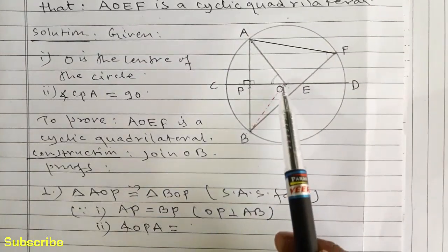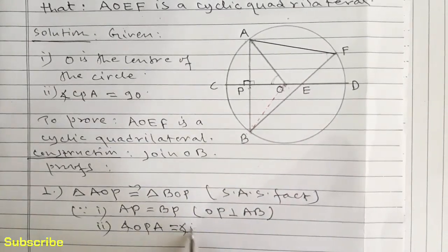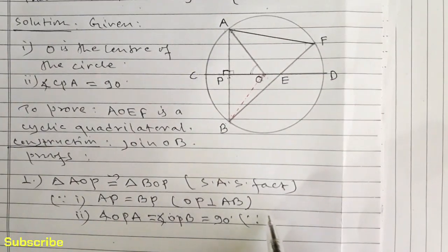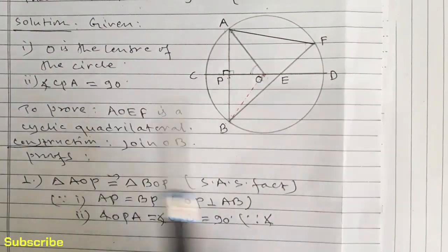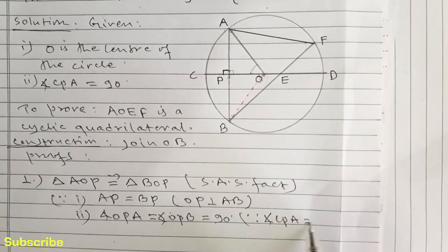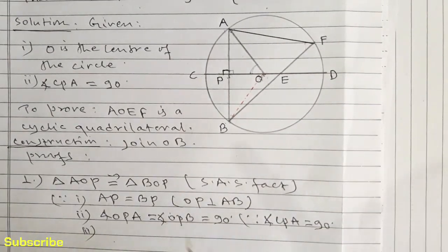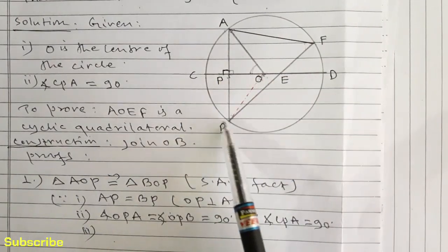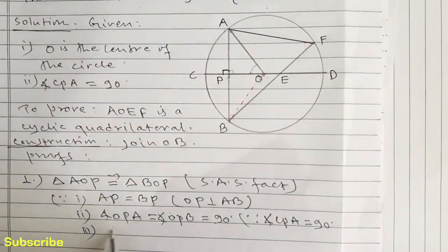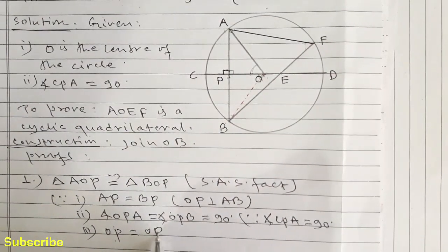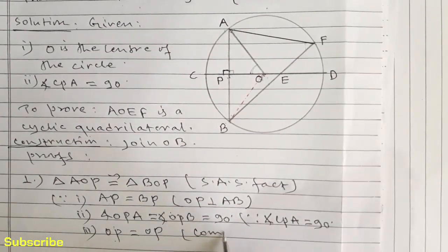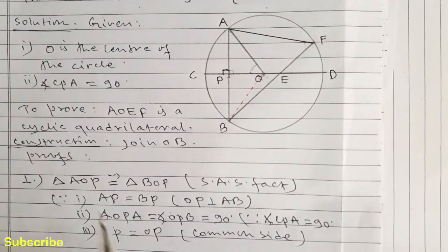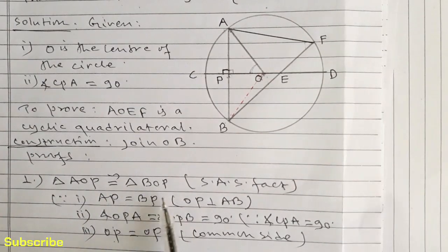We can take angle OPA equals angle OPB because both are 90 degrees — angle CPA is given equal to 90 degrees, so both supplementary angles OPA and OPB are 90 degrees. We can also take OP equals OP, as it is the common side of triangles AOP and BOP. So we can easily show triangles AOP and BOP are congruent by the Side-Angle-Side fact.